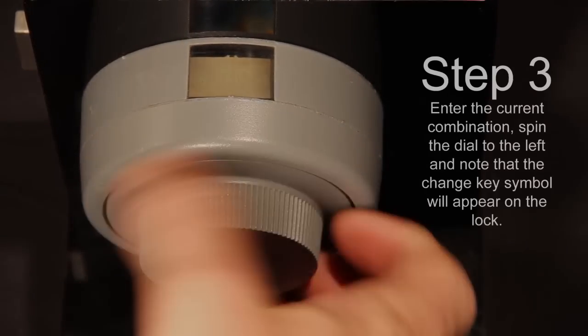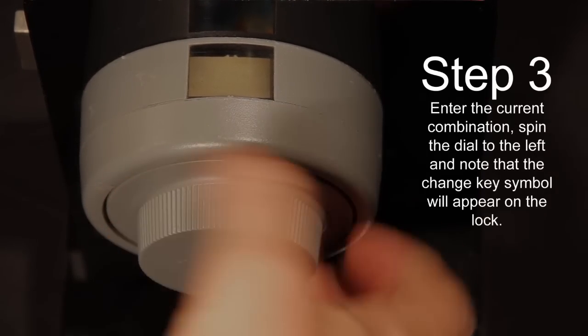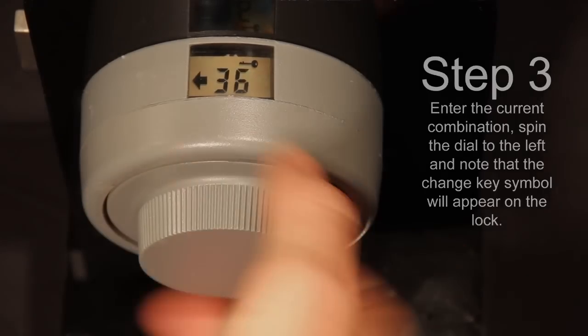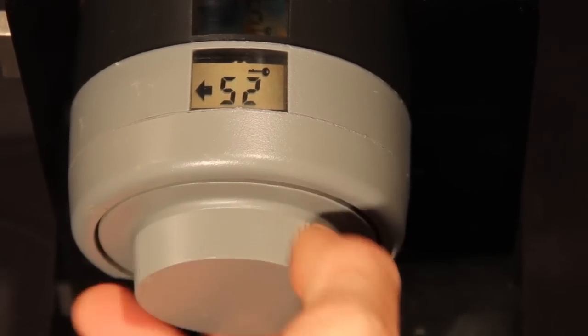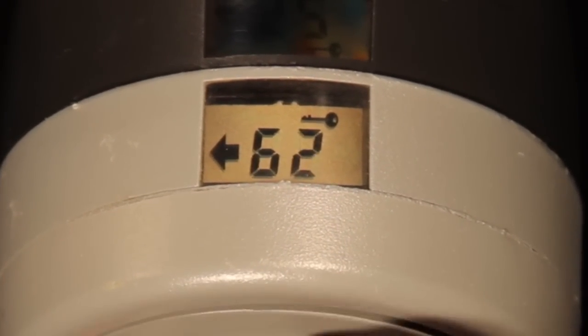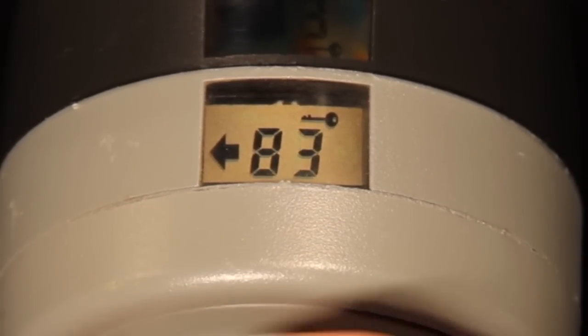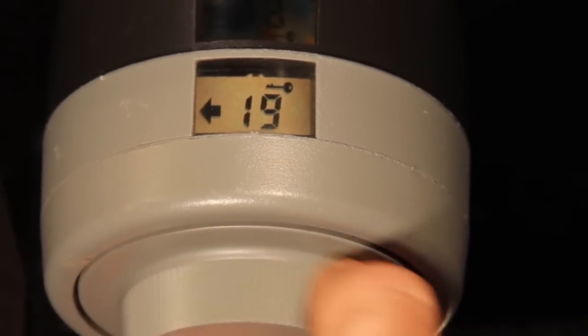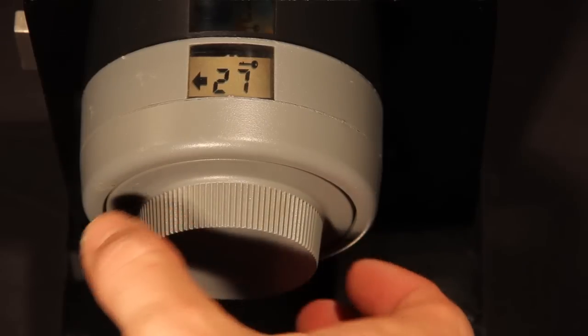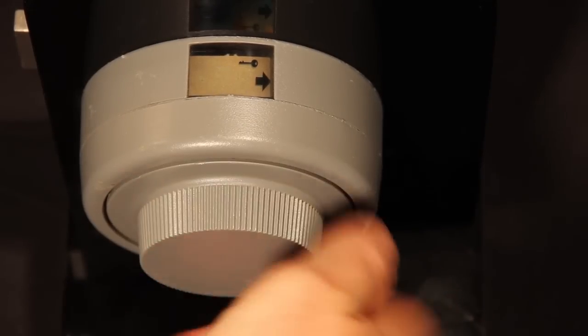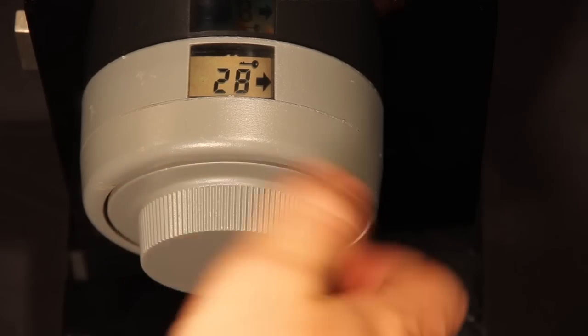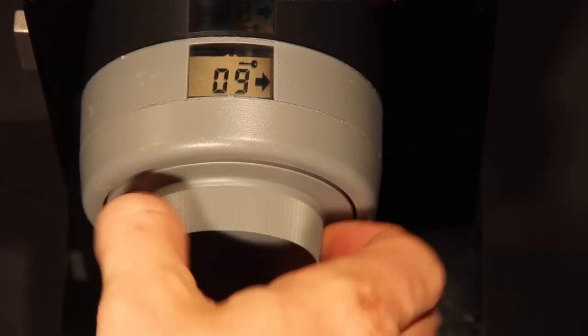After you have inserted the change key, spin the dial to the left, counter-clockwise, and begin to enter the existing combination. Notice that the change key symbol appears in the upper right corner of the X-09 lock viewing screen. It is important to note that the lock will never open when the change key symbol is displayed. While entering the combination, be sure to stop on the last number.